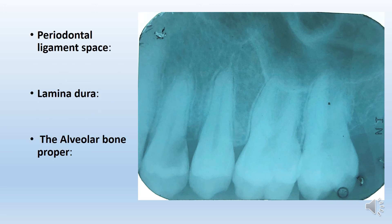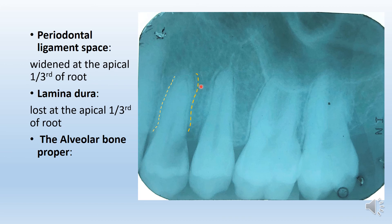Next, it is important to identify the periodontal ligament space. When looking at the periodontal ligament space, you will see a black line along the tooth demarcated by the yellow line. In this radiograph, you can see that at the apex of the tooth, that yellow line is no longer visible — this is the area where you have widened periapical periodontal ligament space as well as loss of lamina dura. The lamina dura is the white line, and the periodontal ligament space is the black space between the white line and the cementum of the tooth root.